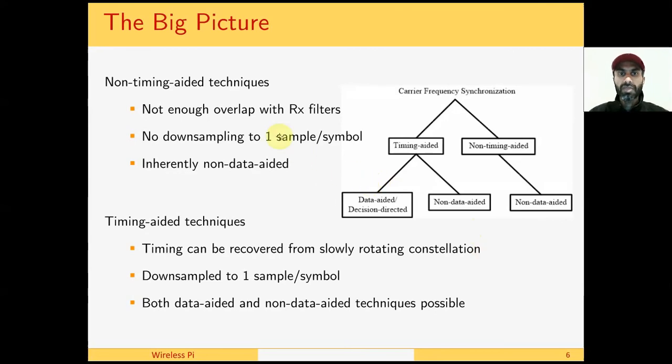The big picture follows from the last slide. For case 2, when there is not enough overlap with the receive filter of the incoming signal, then we cannot downsample the signal to one sample per symbol. We say that this is a non-timing-aided case and since the timing is not available, the data is not available. For example, remember that data is only available at one sample per symbol after the timing is recovered, otherwise we do not know which sample corresponds to our modulation symbol. When the CFO is small, then we have a timing-aided case where both data-aided and non-data-aided cases are applicable, and our algorithms will operate at L equals one sample per symbol.